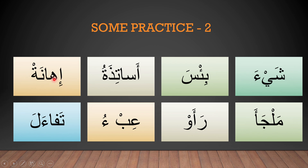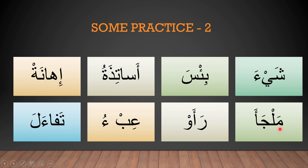Hamza-kasra: I. Ha-alif: Ha. I-ha. Noon-fatha, ta-sukun: Na. Note — when there's a sukun, Ta marbuta acts like Ha. So I-ha-na. Even though it's a Ta, when there's a sukun it acts like Ha-sukun. Mim-fatha, lam-sukun: Mal. Jim-fatha: Ja. Mal-ja. Alif with Hamza — ignore the alif and read Hamza-fatha: A. Mal-ja-a. Ra-fatha: Ra. Hamza on top of alif, Hamza-fatha, ba-sukun: Aw. Ra-aw. Ayn-kasra, ba-sukun: Ib. Hamza by itself, Hamza-damma: Oo. Ib-oo.